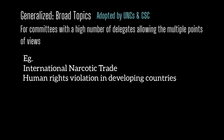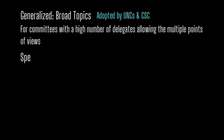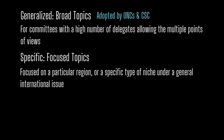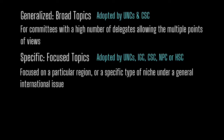The second type are specific agendas, which are focused on a particular region or a specific niche under a general international issue — such as human rights violations during the Russia-Ukraine war or the Sudan crisis. These are the more common type of agendas adopted by all types of committees: UNCs, IGCs, CSCs, NPCs or HSCs. This specific nature of agendas allows committees to focus on in-depth discussion and allows committees with a smaller number of delegates, such as the UNSC, to come up with a realistic solution through diplomacy and negotiation.